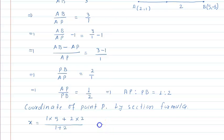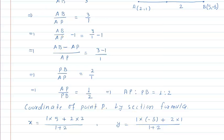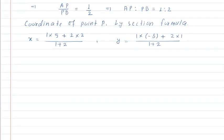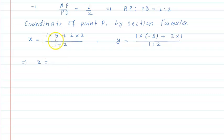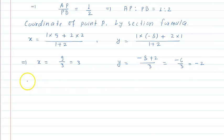Similarly for the Y coordinate: Y equals (1 into minus 8 plus 2 into 1) divided by (1 plus 2). Simplifying: X equals 9 divided by 3 equals 3, and Y equals (minus 8 plus 2) divided by 3 equals minus 6 divided by 3 equals minus 2. So the coordinates of point P are (3, minus 2).